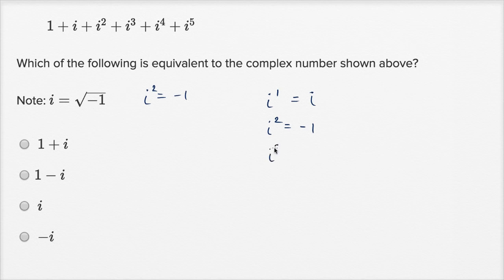Now, what's i to the third power going to be? Well, that's going to be i to the second power times i. It's going to be i times i times i. We could write it that way. i times i times i. Well, i times i, this right over here is negative one. Negative one times i, this is going to be equal to negative i.